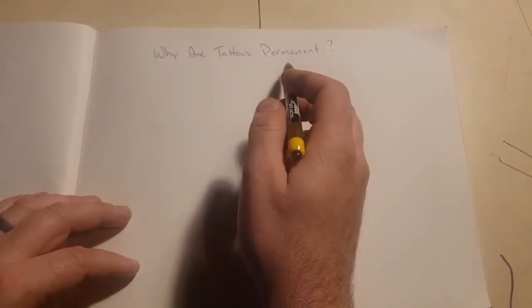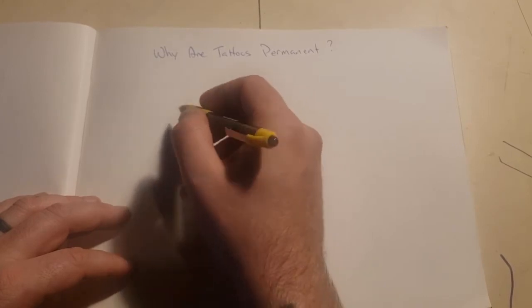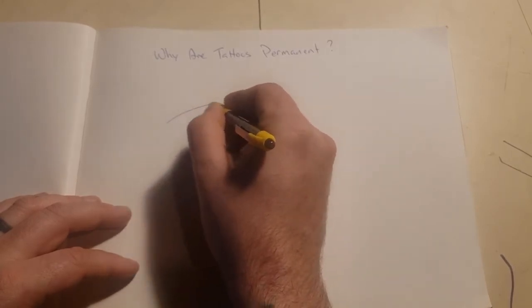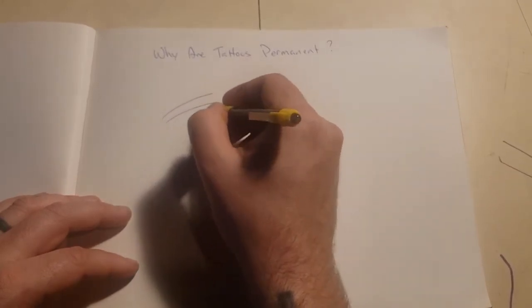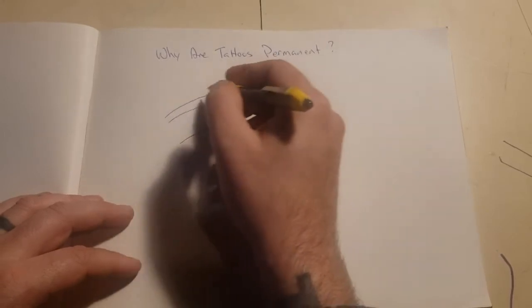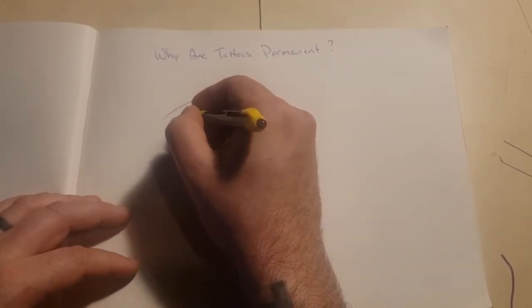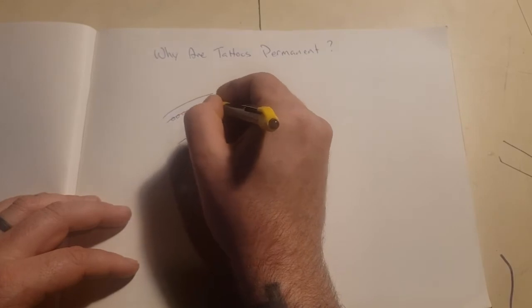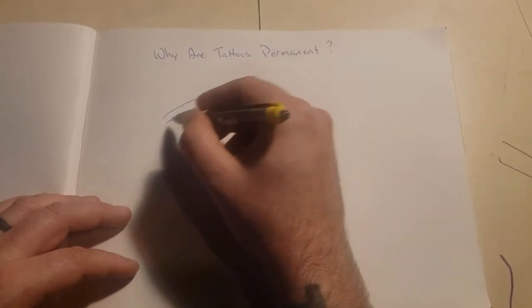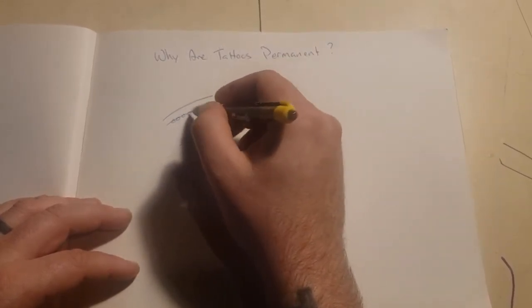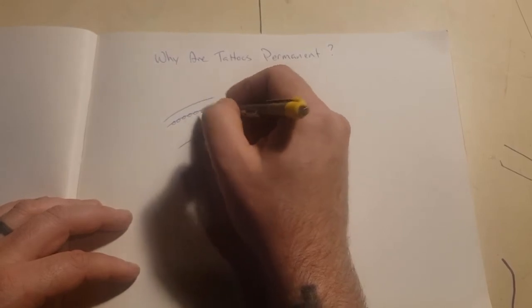Why are tattoos permanent? Well, back in time, everyone thought that tattoos were permanent because we knew about layers of skin and being able to put pigment there. We kind of thought it was almost like wrapping something in cellophane - we put the pigment in and it just sits between the two layers of skin, the epidermis and the dermis.